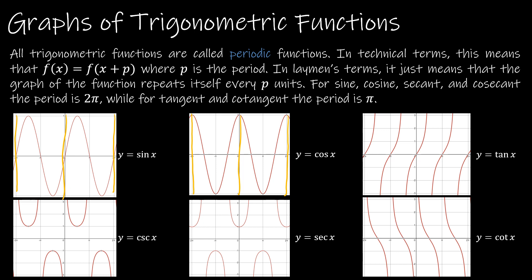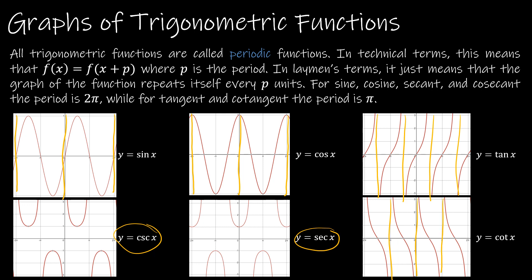So for y equals sine of x and its inverse cosecant of x, and y equals cosine of x and its inverse secant of x, the period is going to be 2 pi. If I look at tangent and cotangent, again inverses of one another, we can see that the period to repeat itself is pi. So from negative pi to 0 to pi is exactly the same. It takes just pi for that graph to repeat itself.